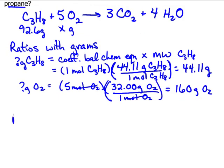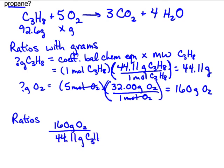Now I write my ratio. So for every 160 grams of O2, I need 44.11 grams of C3H8. I'm going to pause for just a second. Notice the balanced chemical equation we've established is 1 mole to 5 moles of O2. Well, 1 mole is 44.11 grams, and 5 moles of O2 is 160 grams. So that's what we're doing. We're still telling the same thing. It just has grams built in.